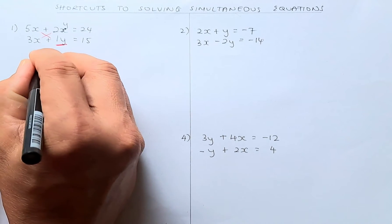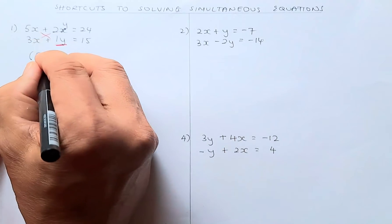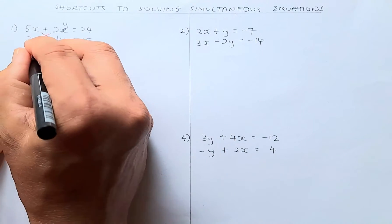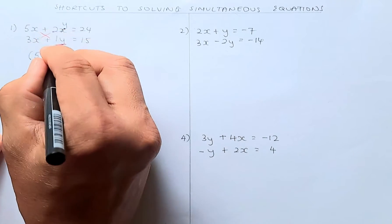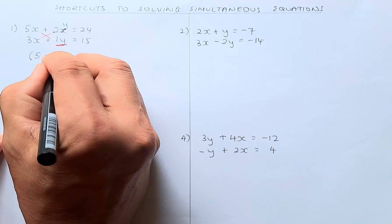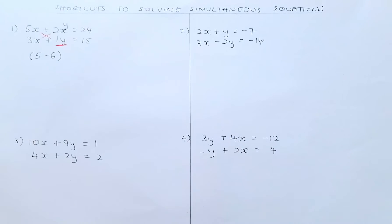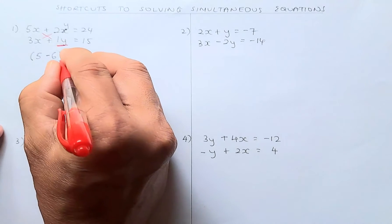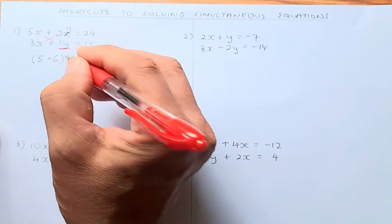So 1 multiplied by 5 will give you 5. And then you're going to minus the opposite end. So 3 times 2 is going to be 6. And then you're going to put x there, because x appears first — so just put x there.